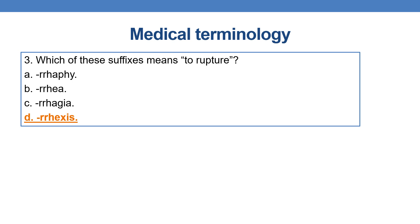Which of these suffixes means to rupture? The suffix is -rexis, as in amniorexis — which is the rupture of the amniotic sac. So rexis indicates rupture, and the correct answer is option D.